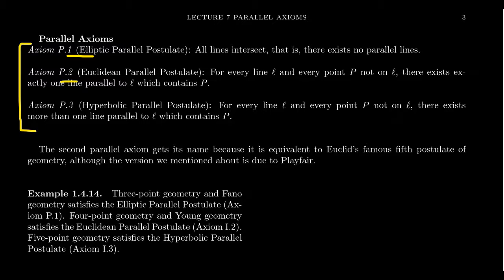That really comes down to tradition from Euclid's book, the Elements, where he essentially established the modern idea of the axiomatic system for studying geometry. With Euclid's geometry, his fifth postulate was a statement about parallel lines, and that postulate has been scrutinized so much that the word postulate is always used when describing parallel axioms.